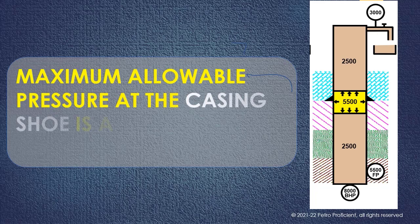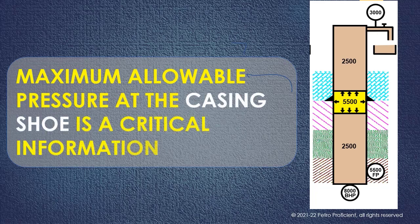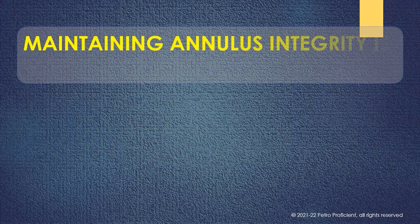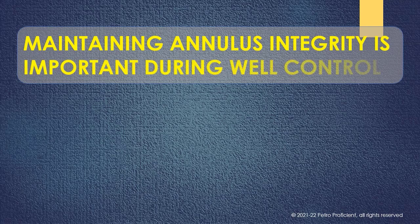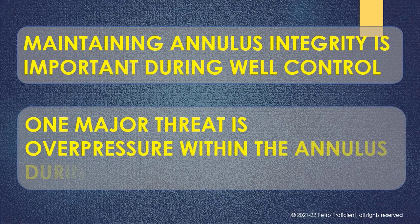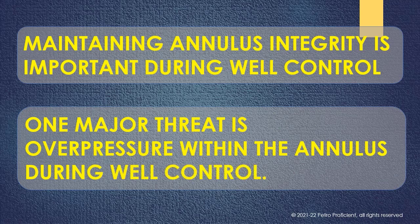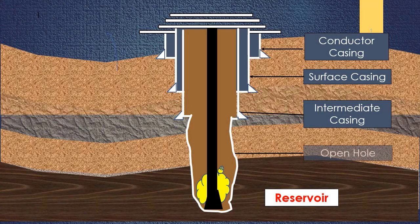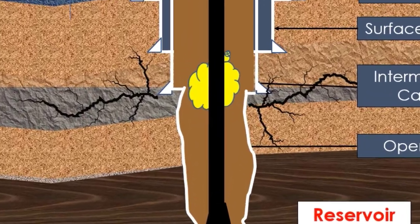Maximum allowable pressure at the casing shoe is critical information. Maintaining annulus integrity is a vital task during operations and especially during well control. One major threat to annulus integrity is over-pressure within the annulus during well control. This could lead to burst or collapse of a casing, or fracture of formation just below casing. The chances of fracturing the formation below casing is higher, as this is considered the weakest point in the annulus.